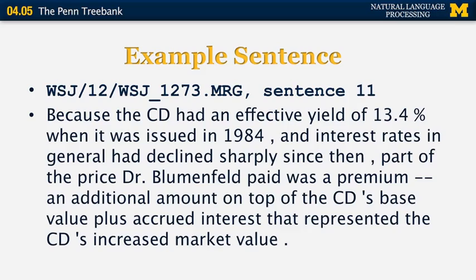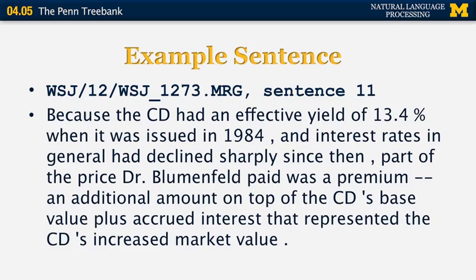Here's an example sentence from the Wall Street Journal section of the Penn Treebank — section 12, sentence 11: 'Because the CD had an effective yield of 13.4% when it was issued in 1994 and interest rates in general had declined sharply since then, part of the price Dr. Blumenfeld paid was a premium — an additional amount on top of the CD's base value plus accrued interest that represented the CD's increased market value.' This sentence illustrates the complexity and subject matter specific to the Penn Treebank.